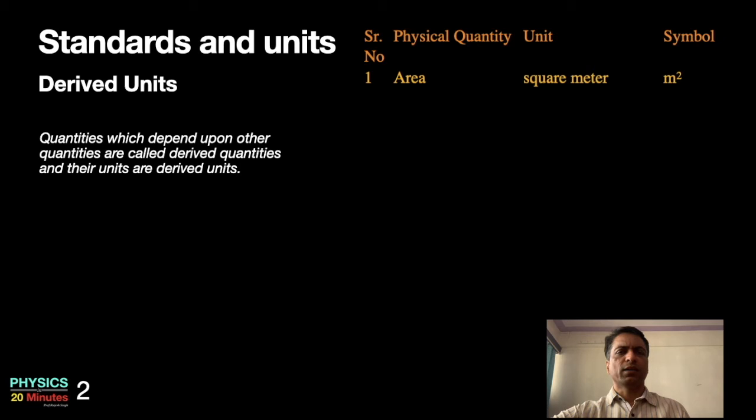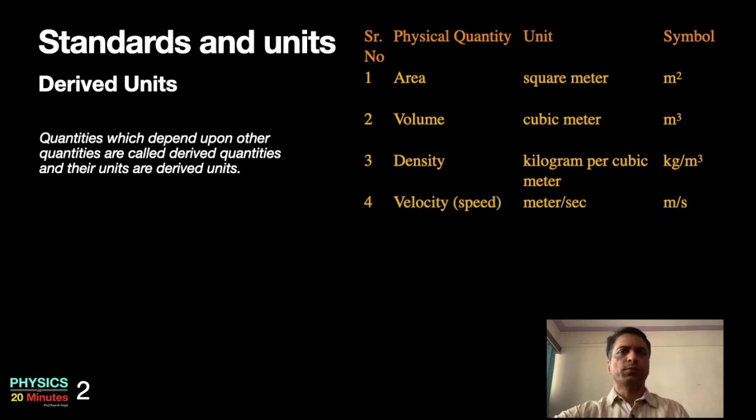Area. Look at the area, think about area measurement. Mostly it is length into breadth. Length is an example of length measurement, breadth is also an example of length measurement. So you multiply the two lengths. It's a derived quantity and unit is meter square. Volume: length into breadth into height, unit is meter cube. Density is mass upon volume, unit is kilogram per meter cube. Velocity normally is distance upon time, unit is meter per second.